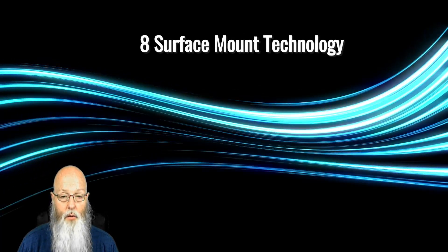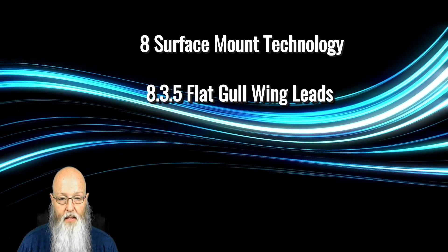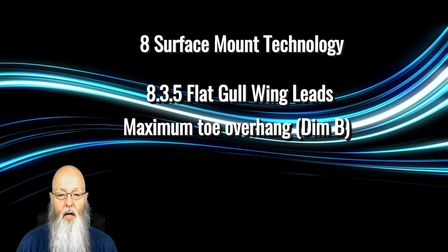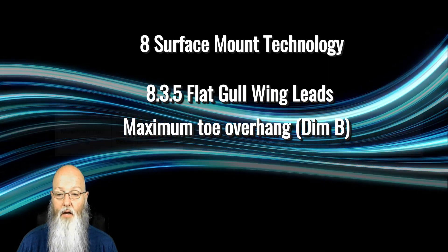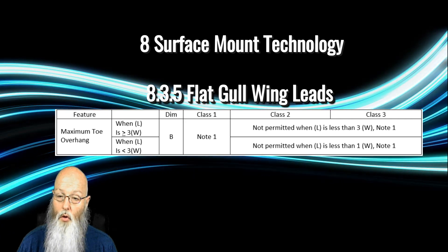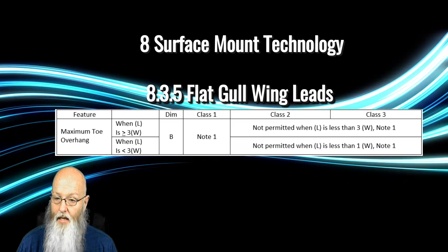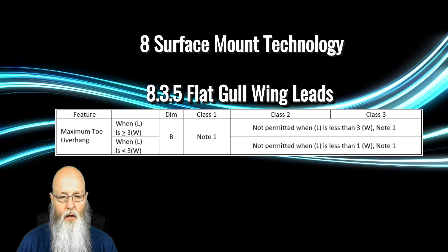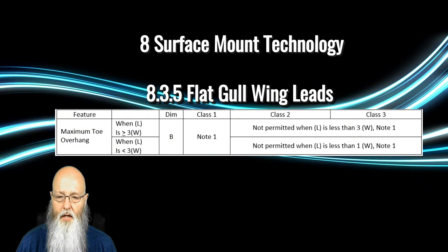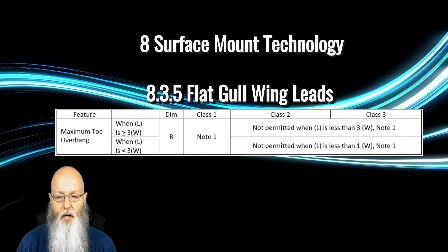Speaking of paragraph 8, there were a few changes and additions to the surface mount criteria. In 8.3.5, Flat Gullwing Leads, some modifications were made to the table and criteria. The criteria for maximum toe overhang has been split out and the allowed overhang is now based on the length of the lead foot. When the lead is greater than or equal to three times the width of the lead, toe overhang is allowed as long as it does not violate minimum electrical clearance. When the lead foot is less than three times the width, overhang is not permitted when the lead is less than one times the lead width. At the time of this video, a question was out to IPC about this seemingly contradictory criteria.